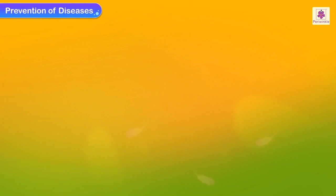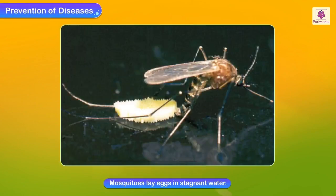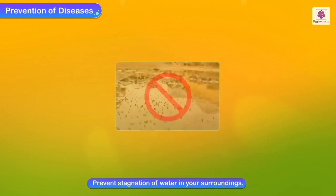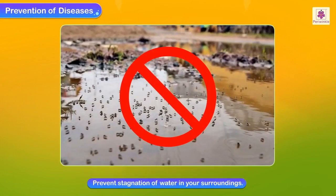Prevention of diseases: mosquitoes lay eggs in stagnant water. Prevent stagnation of water in your surroundings to reduce mosquito breeding.